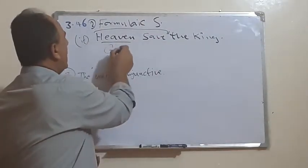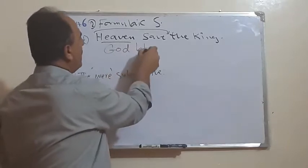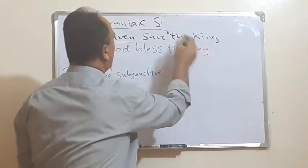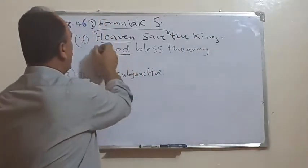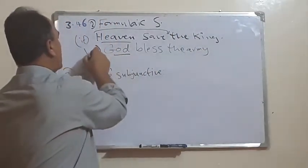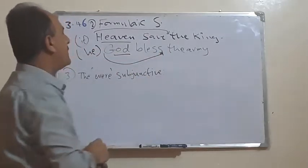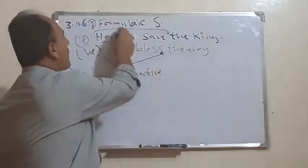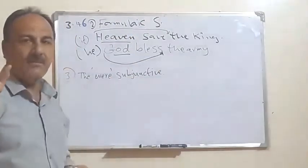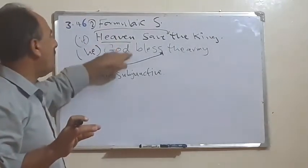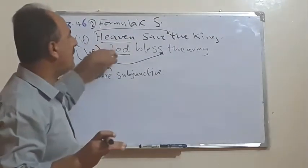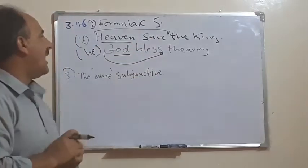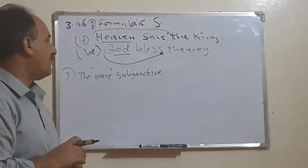Another example: 'God bless the army.' Again, if we replaced 'God' with 'he,' you would say 'God blesses the army.' But in the formulaic subjunctive, we do not make concord between the subject and the verb. We keep it in the base form. So the form is fixed and limited — that is what 'formulaic' means.